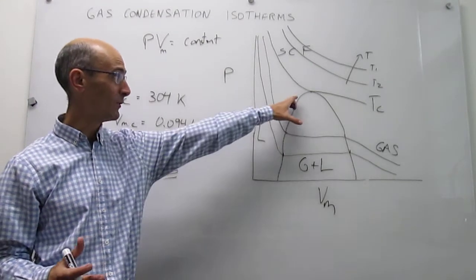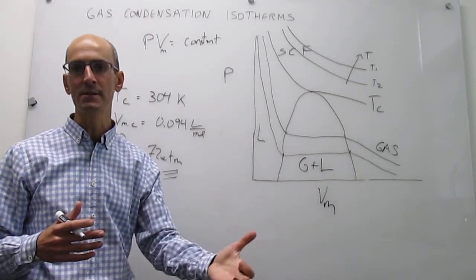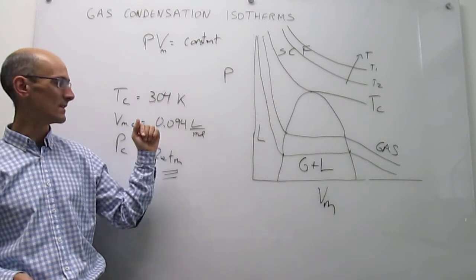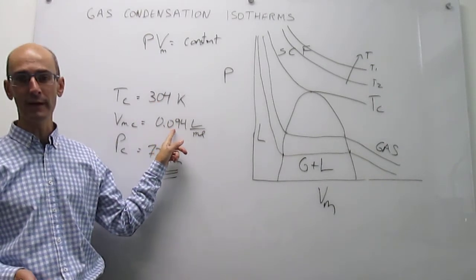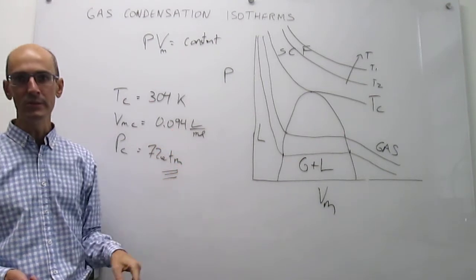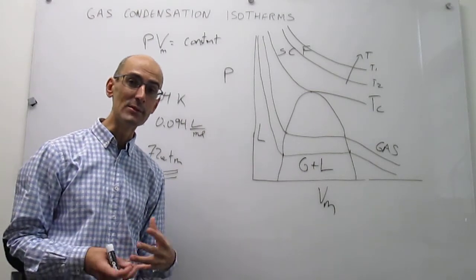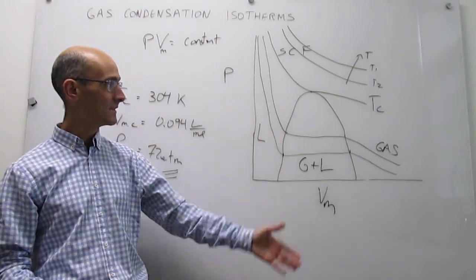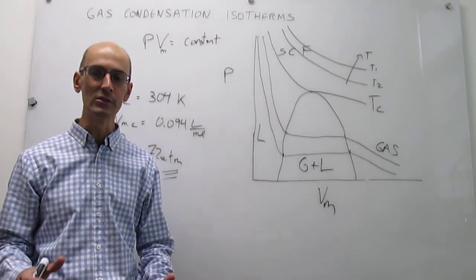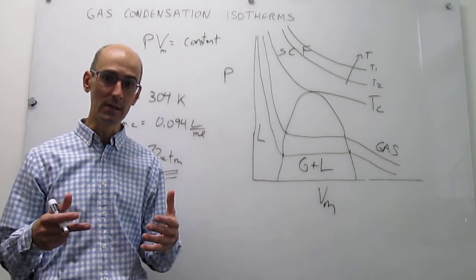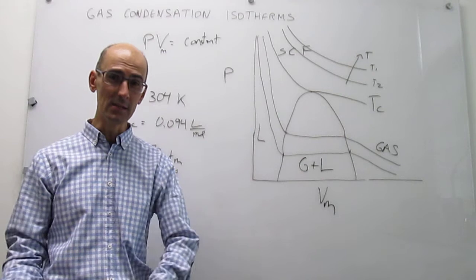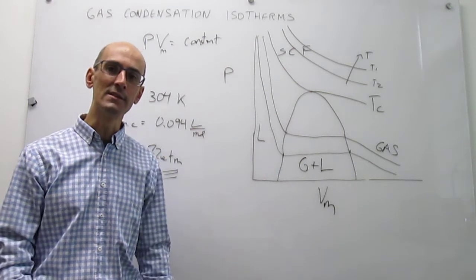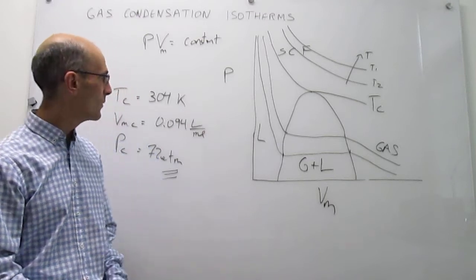For water the critical point values are quite different: the critical temperature is about 647 K — roughly twice that of CO₂ — the critical molar volume is about 55 cm³/mol, and the critical pressure is about 218 atm, roughly three times that of CO₂. All substances have a critical point, meaning that under some conditions you can always condense a gas into a liquid. Whether a gas behaves ideally really depends on the conditions, and the ability to condense is itself a manifestation of non-ideality.